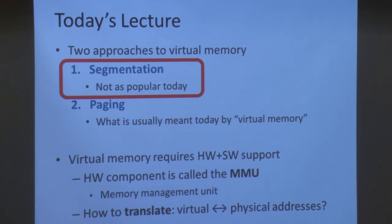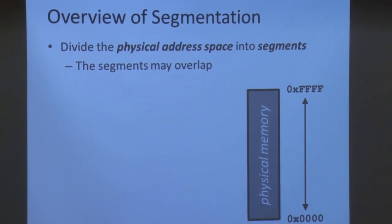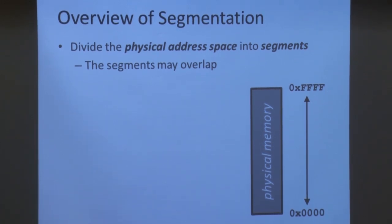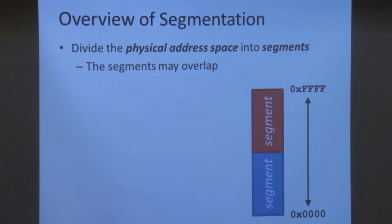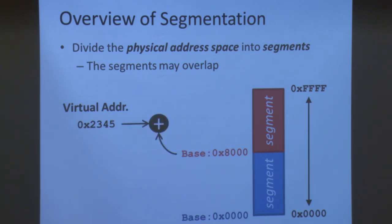I'll start by looking at segmentation, in roughly chronological order starting from the 70s and 80s. The key idea of segmentation is to divide the physical address space into different segments, which may overlap. Each segment has a starting or base address. If a program wants to access a certain virtual address, to calculate the physical address you take the virtual address and add it to the base, yielding the physical address. That is segmentation in a nutshell.